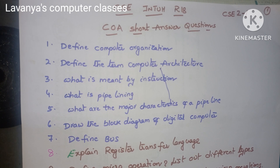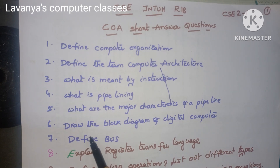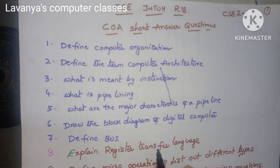The first question is: define computer organization. Second: define the term computer architecture. Next, what is meant by instruction? What is pipelining? What are the major characteristics of pipelining? Draw the block diagram of a digital computer. Define bus. Explain register transfer language. Next, list out the different types of instruction formats.